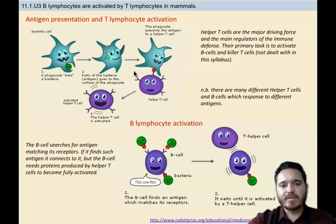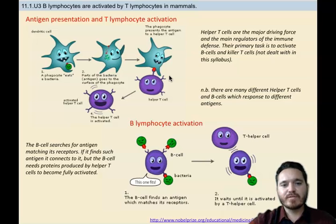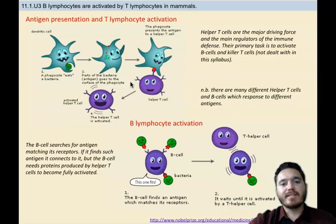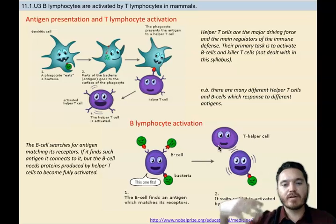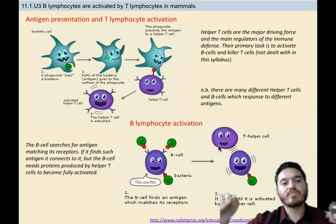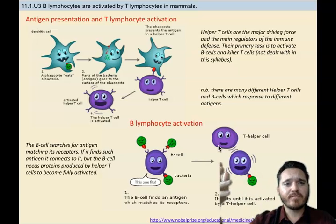It's worth noting that HIV attacks these helper T cells. The HIV virus targets the T lymphocytes, causing their numbers to drop dramatically and leading to AIDS. Essentially, HIV prevents antibody production, which is very serious because you need those antibodies for a specific immune response to fight off a wide range of pathogens.